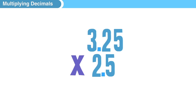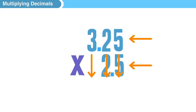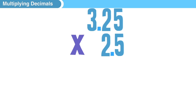Here, all you want to do is line up the numbers to the right. Okay, now we're just going to multiply the way that you've always multiplied. We're not going to worry about the decimals for now. So we take the farthest right on the bottom and multiply it by each number in the top, and that gives us 1625.